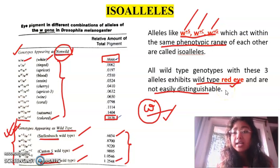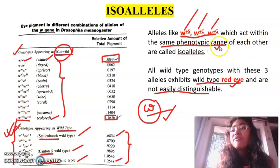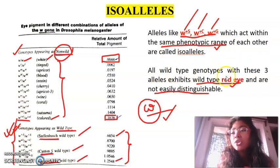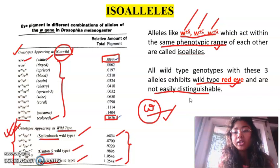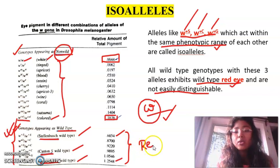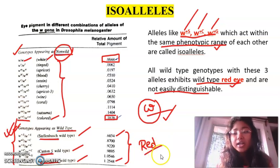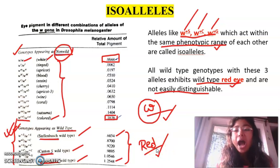Alleles like W plus S, W plus C, and W plus G, which act within the same phenotypic range of each other, are known as isoalleles. All three wild type genotypes exhibit wild type red color and are not easily distinguishable. Isoalleles are those alleles which exhibit the same phenotypic range — in this case, the same wild type red color of Drosophila eye — and the difference between these three kinds of red cannot be distinguished easily. That is why they are known as isoalleles.